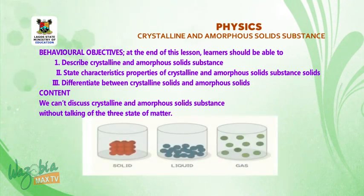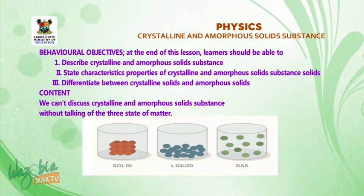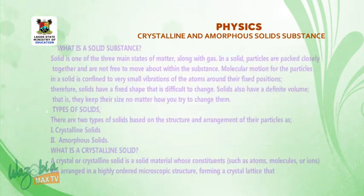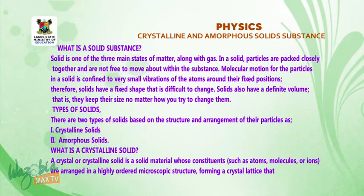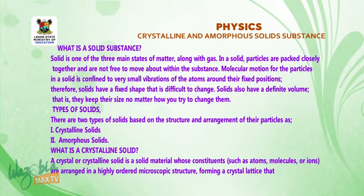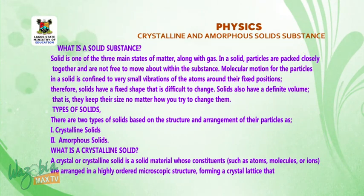We can't discuss crystalline and amorphous solid substances without talking about the three states of matter. The three states of matter are solid, liquid, and gas. To discuss crystalline and amorphous solids, we need to concentrate on solid. Solid is one of the three main states of matter. In a solid, particles are packed closely together and are not free to move. Molecular motion is confined to very small vibration.